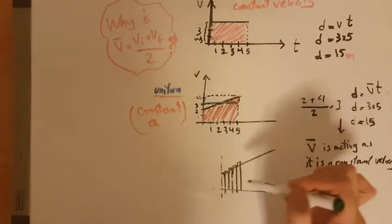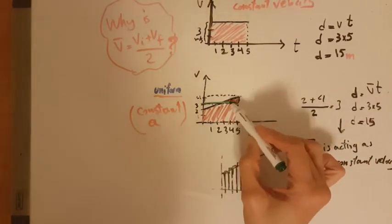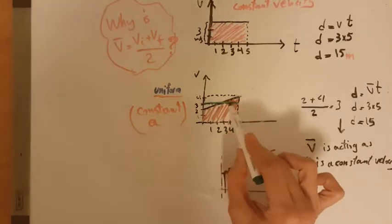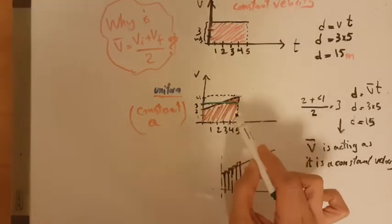This area would be as if you are finding this area under this green line, which is actually our average velocity we calculated. Because this part is added to it, this part is taken away from it. These two triangles obviously are equal.